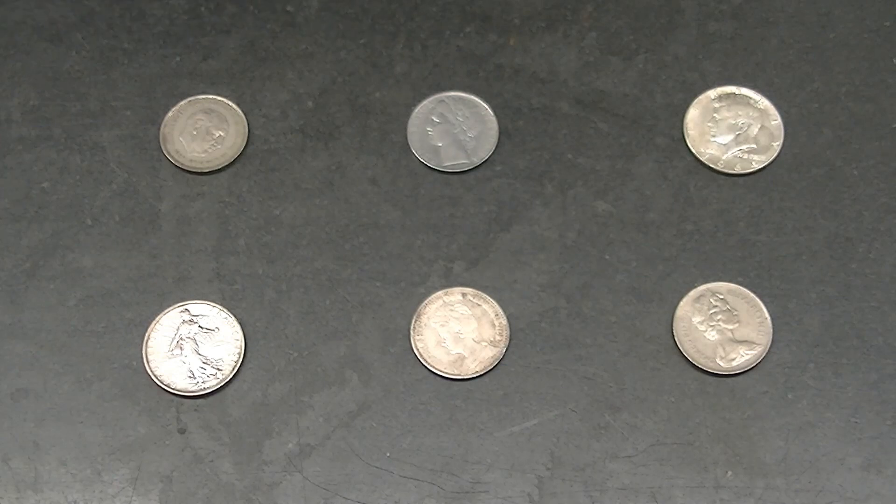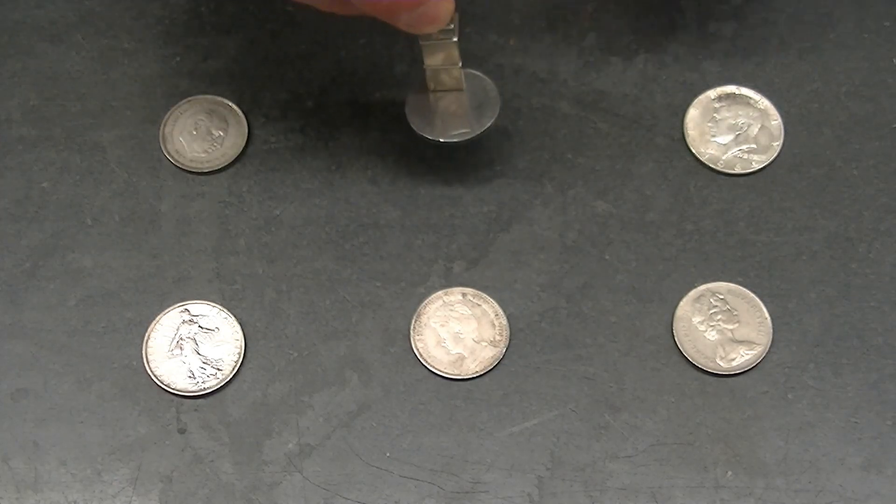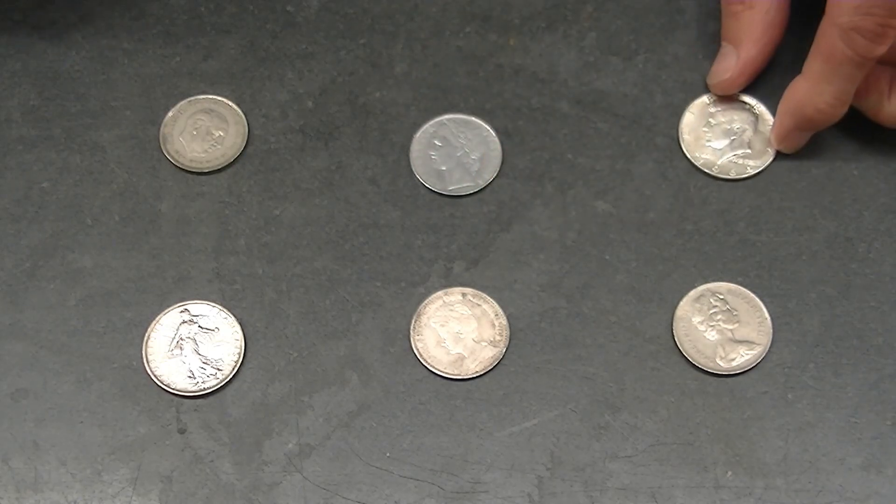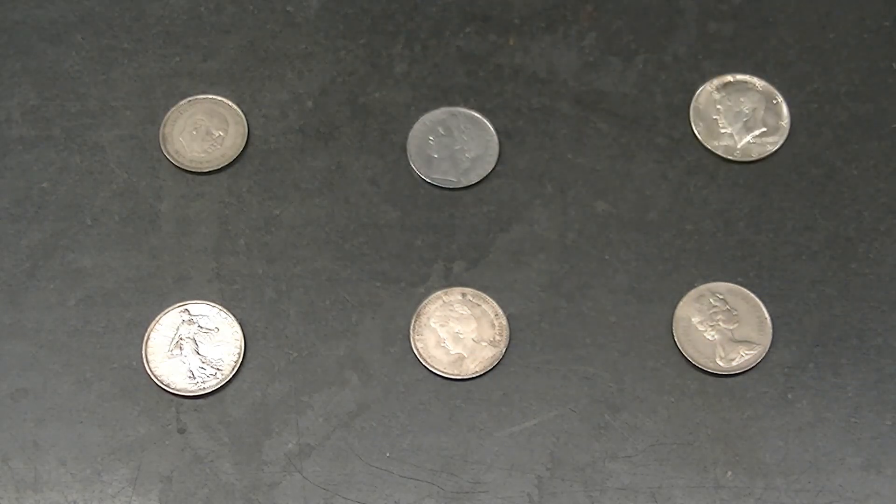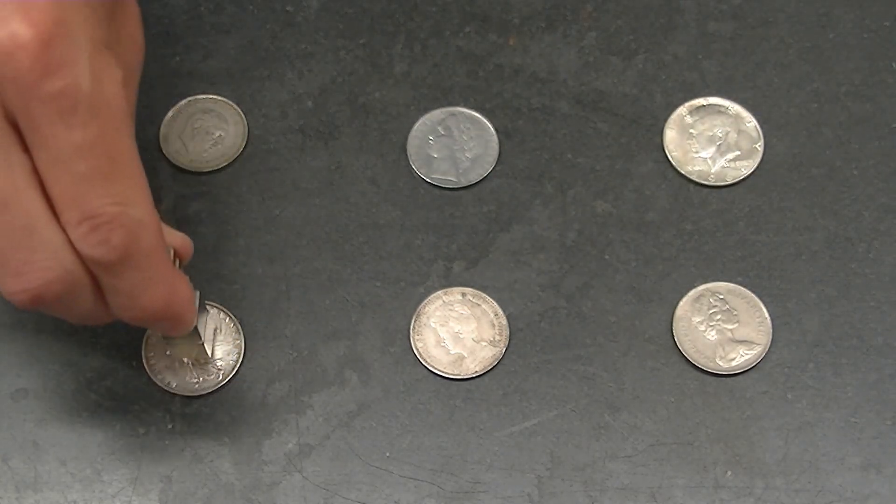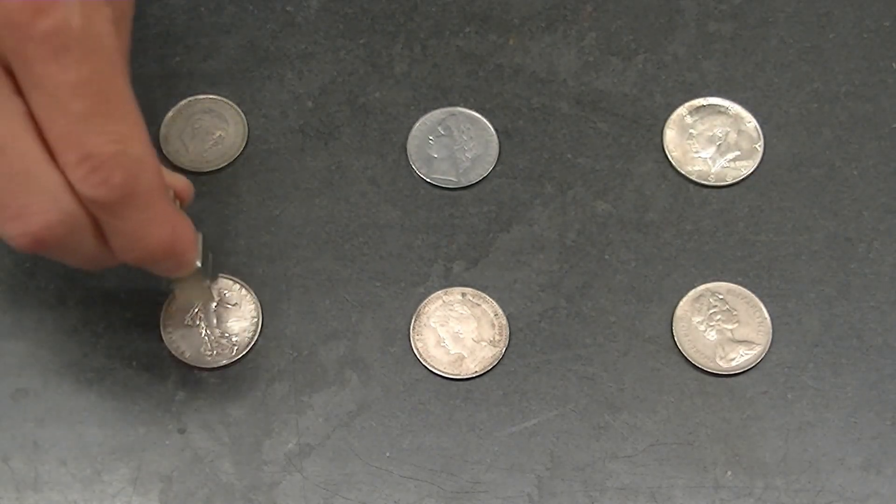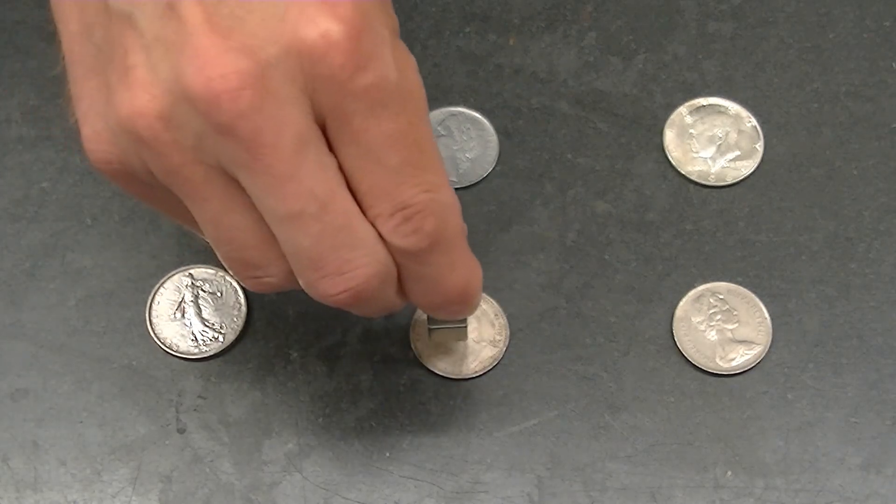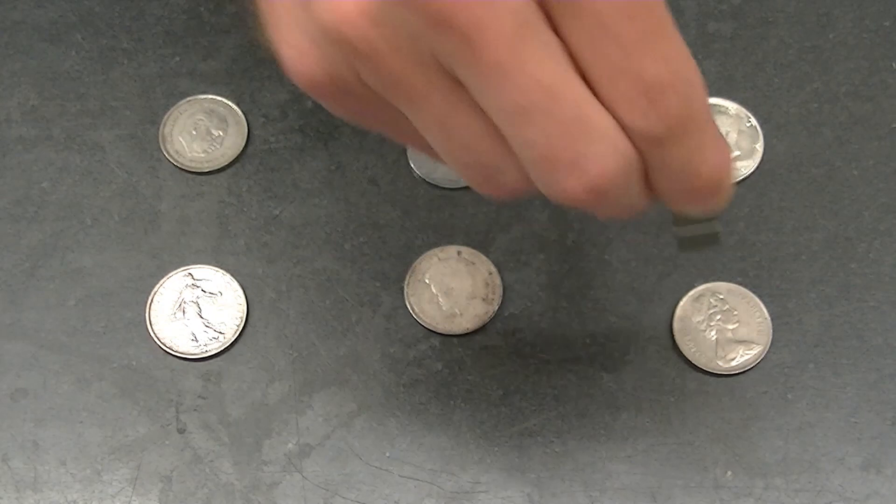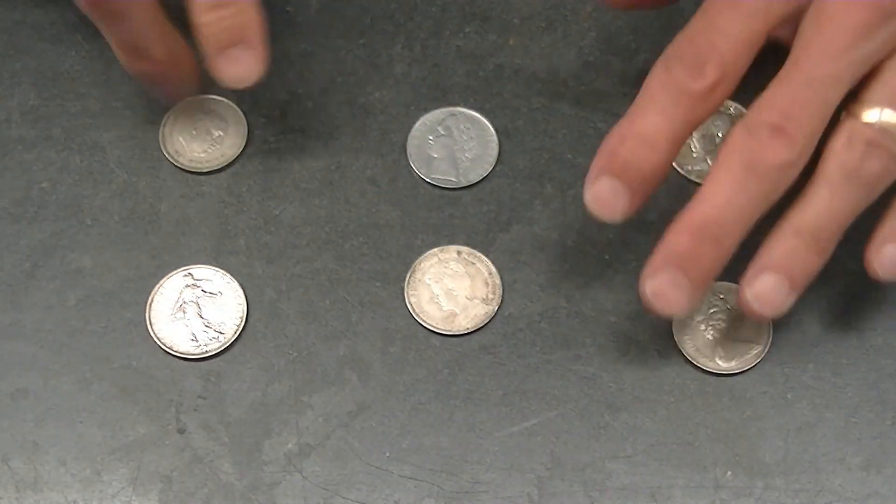This coin doesn't seem to have silver. Oh well, this coin is probably made of iron or nickel. This coin does respond, so it's probably made of silver. Same with this one. This one as well. And this one probably does not contain any silver.